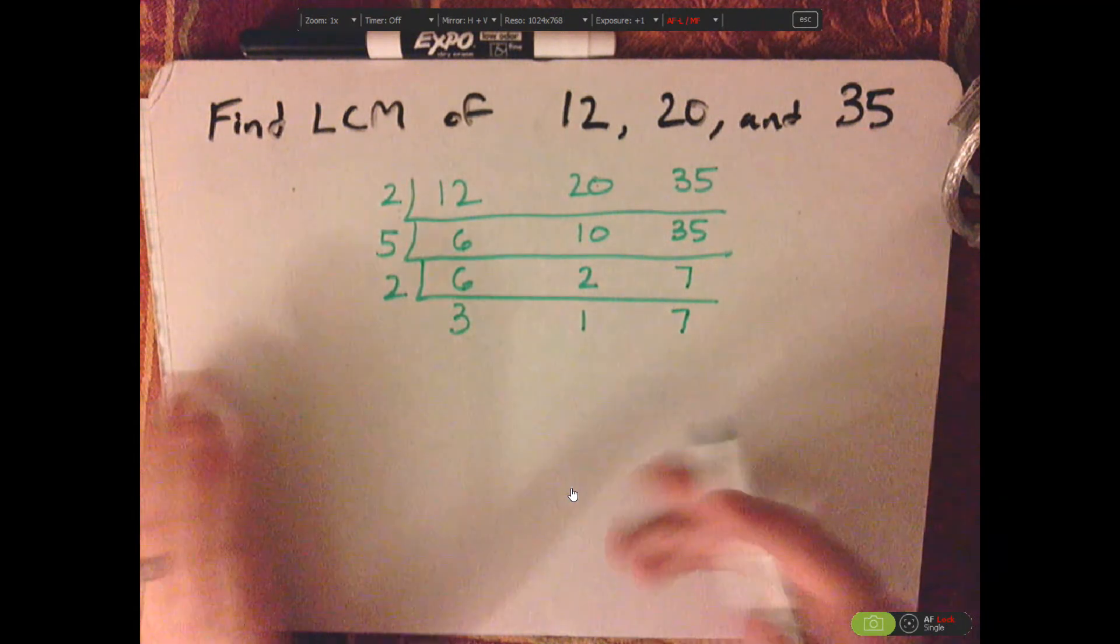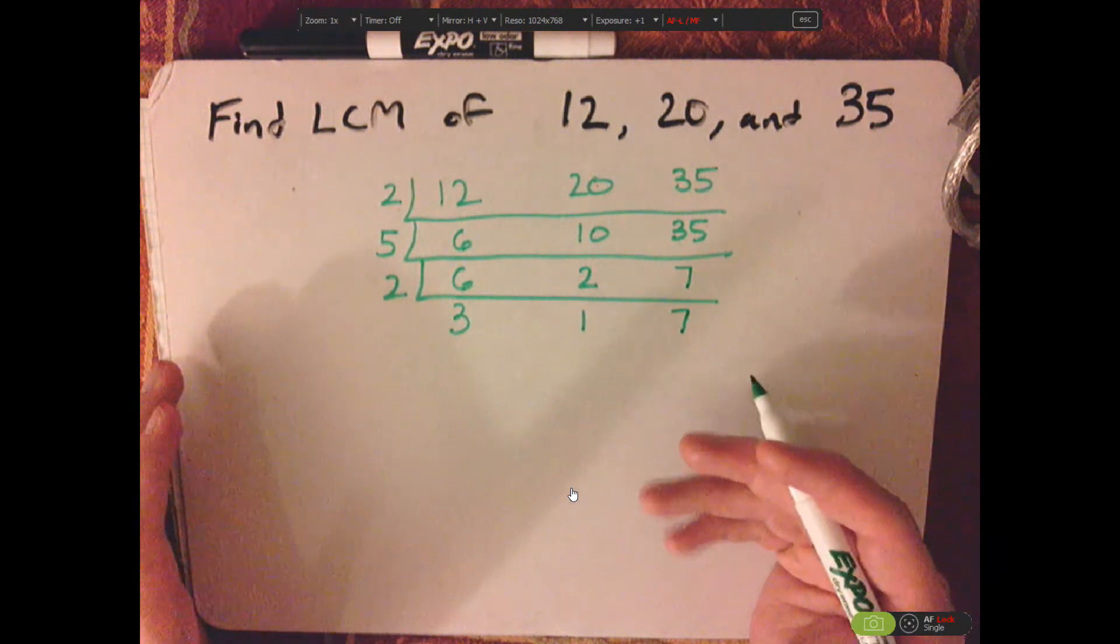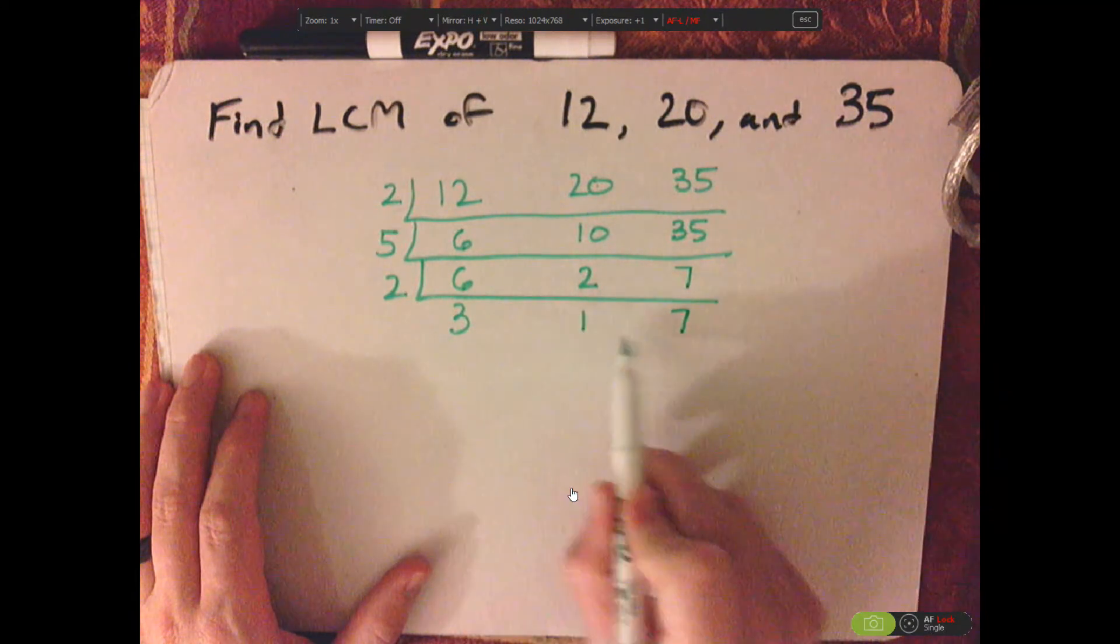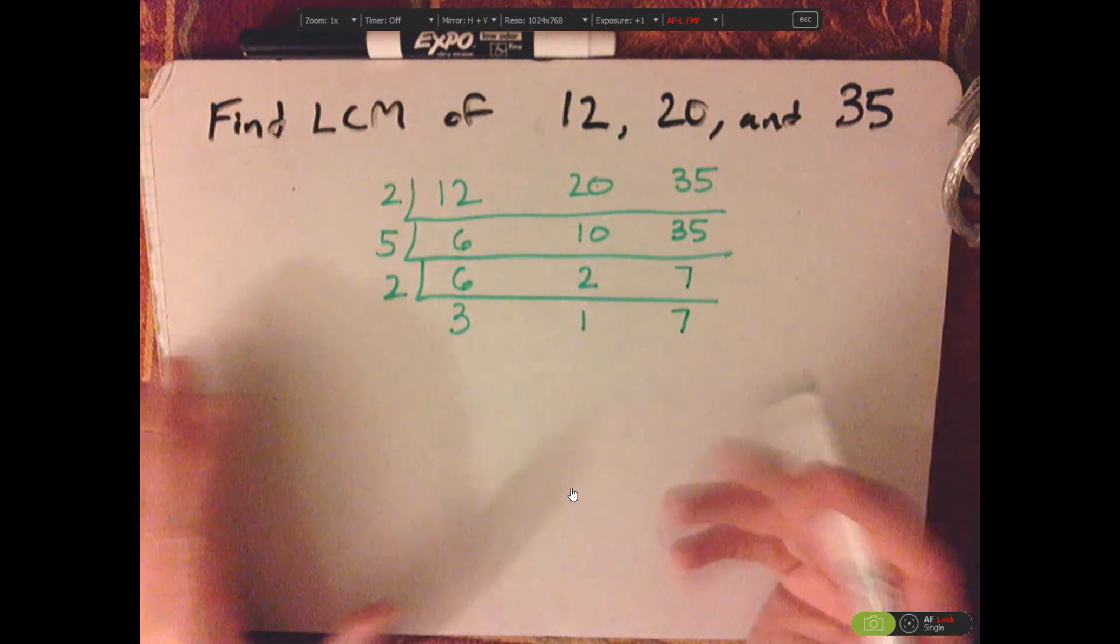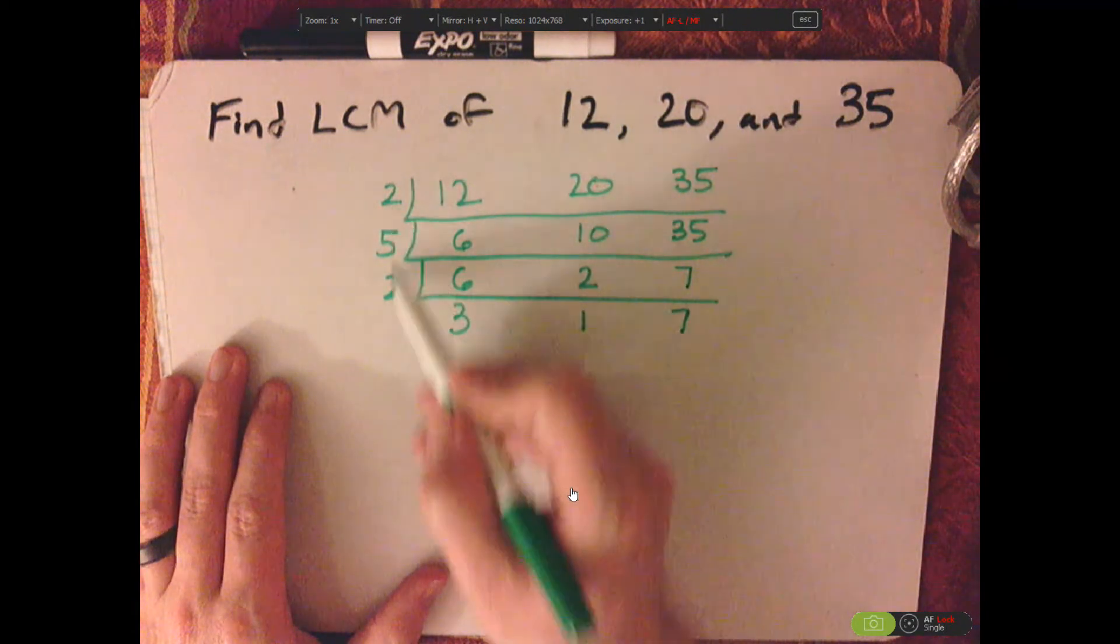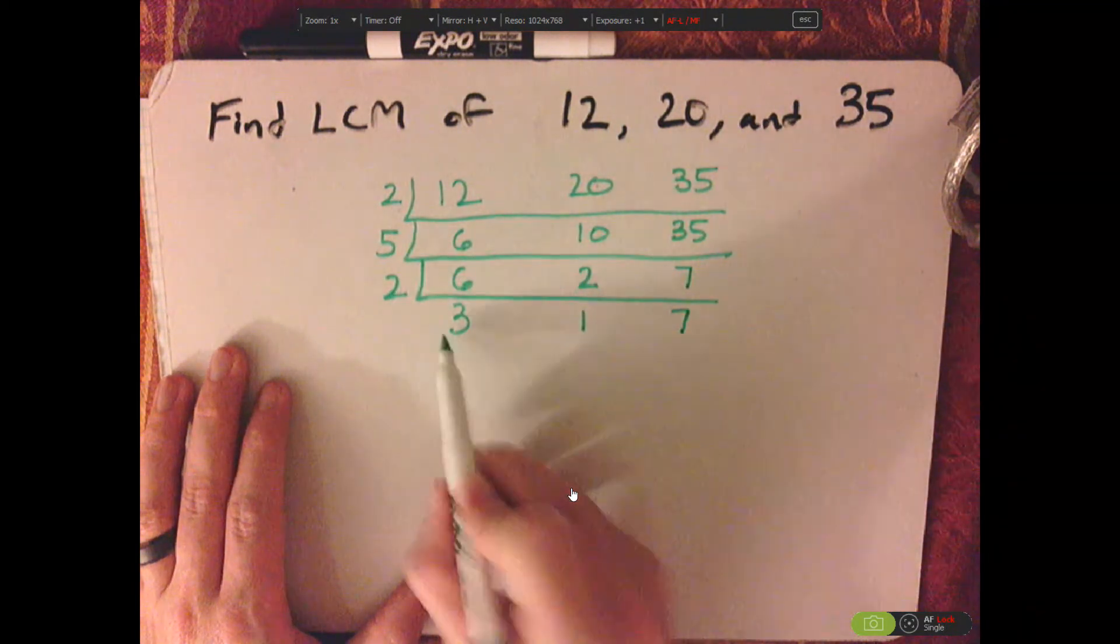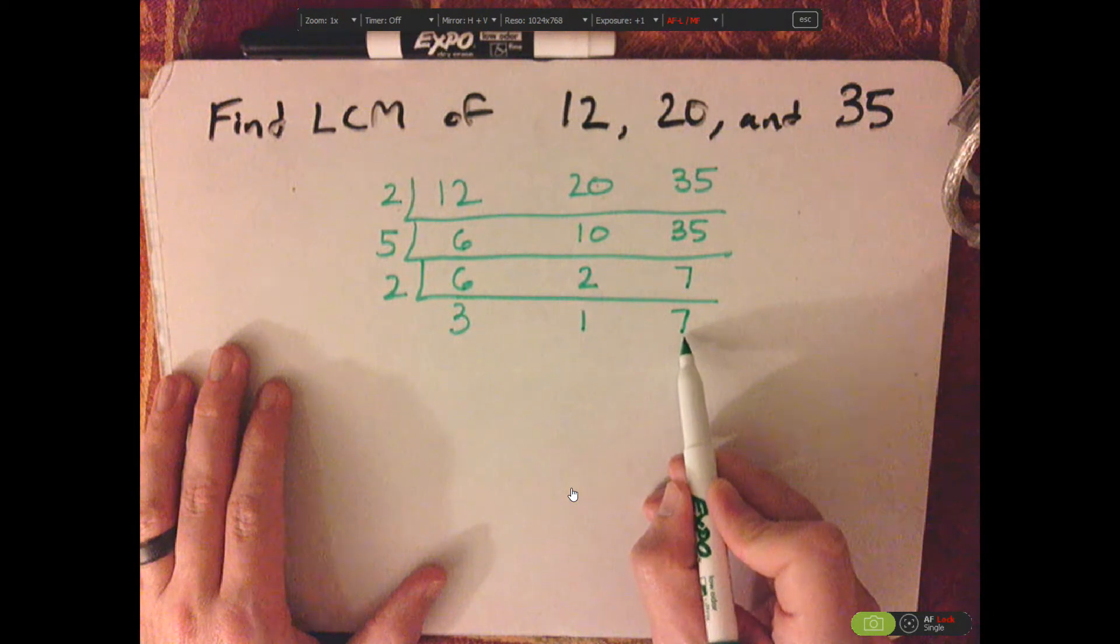Now, what is the LCM? You keep on going until there's no more common factors with any of them, and then you just multiply along the side here and along the row here.